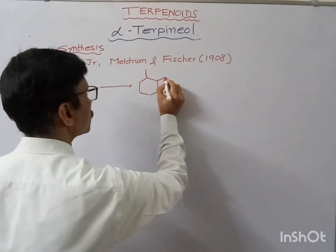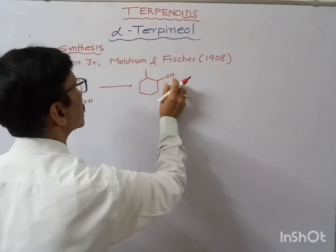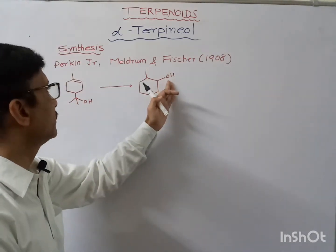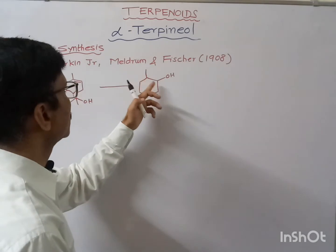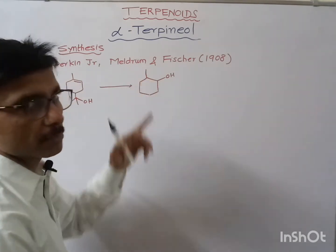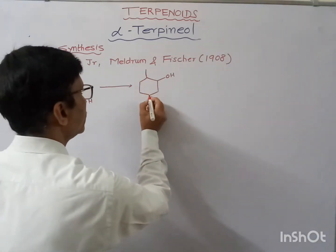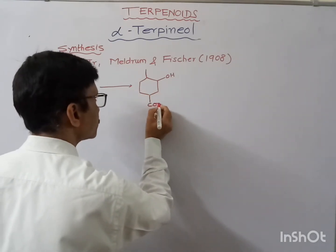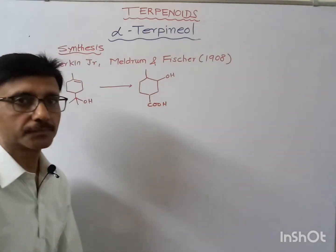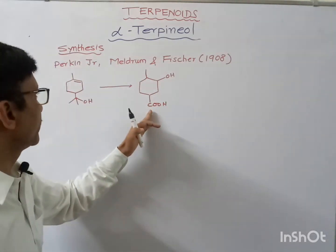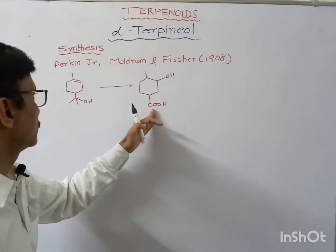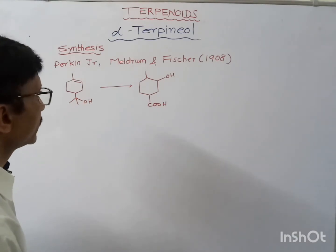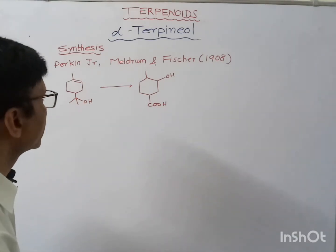In retrosynthetic analysis, this double bond can be obtained if we have an OH group or a leaving group like bromine — after removal of HBr we can get a double bond. And if a COOH group is present, how can we obtain the tertiary alcohol from this COOH group?